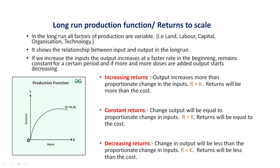Long-run production function and returns to scale. All the concepts studied earlier — production function with one variable and with two variables — apply to the short-run period of a firm, where few factors are variable and others are kept constant. In the long-run period, all factors of production are variable. The factors considered here are land, labor, capital, organizational factors, and technology — all will be varied proportionately.